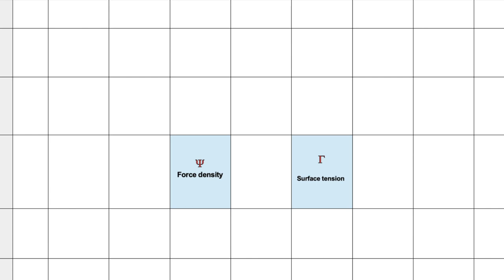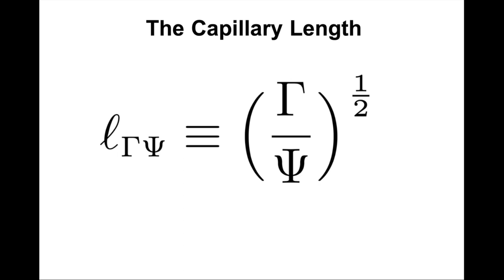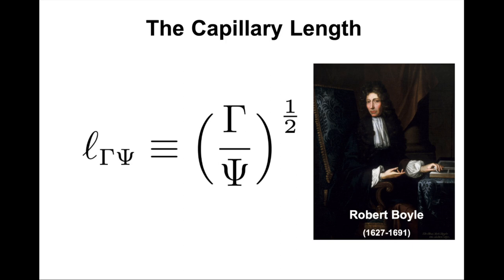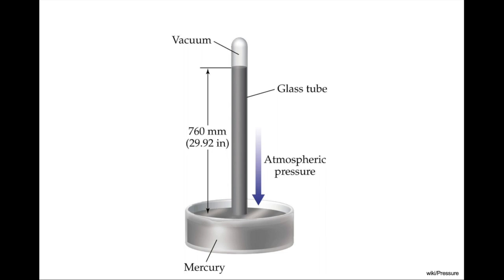The two mechanical quantities are force density psi and surface tension gamma. Since they are two columns apart, the simple length has a one-half exponent. This length began emerging in the 17th century following the development of the mercury barometer. Robert Boyle was involved in the history of this simple length — stimulated by the development of hydrostatic equilibrium, his mind was on the rise of various liquids in glass tubes called capillaries when particularly small.